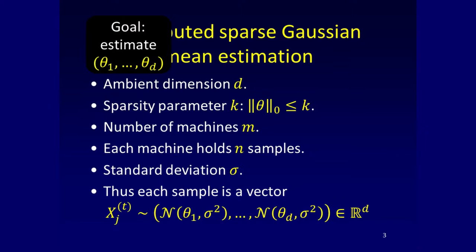For the most part, we will talk about distributed sparse Gaussian mean estimation. We get vectors that are independent Gaussians from D-dimensional space, so the ambient dimension is D. Sparsity is a common assumption in learning: it's supposed to allow you to learn with less data, faster, or make better predictions. It's a simplicity assumption about the structure of the data.